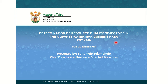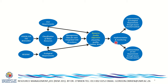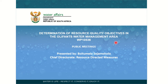We have different components. One component is classifying the resource — deciding whether to allocate it for high use, a balance between use and protection, or high protection. Once we've decided and classified the resource, we can come up with resource quality objectives, or RQOs. Today I'm going to start on a presentation on RQOs done for the Olifants River Catchment.